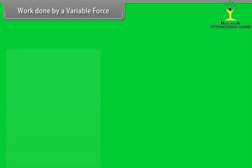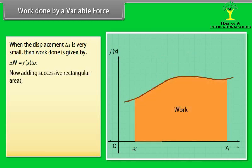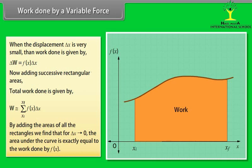Work done by a variable force. When the displacement Δx is very small, then work done is given by Δw = Fx·Δx. Now, adding successive rectangular areas, total work done is given by w approximately equals summation from initial position xi to final position xf of product of Fx and Δx. By adding the areas of all the rectangles, we find that for Δx tends to 0, the area under the curve is exactly equal to the work done by Fx.